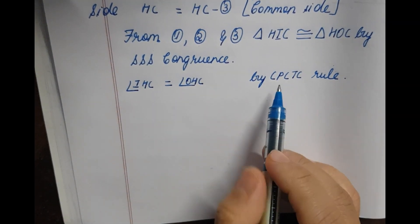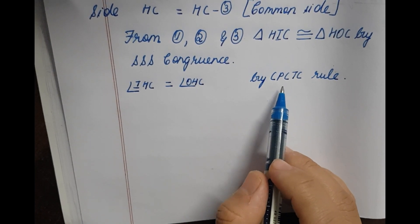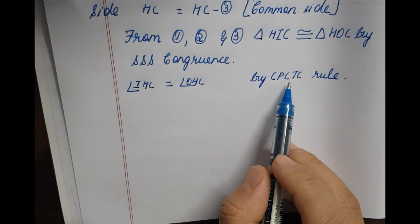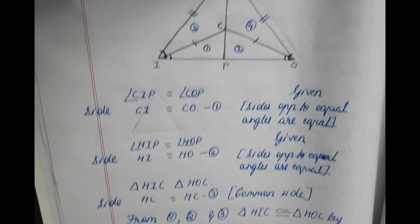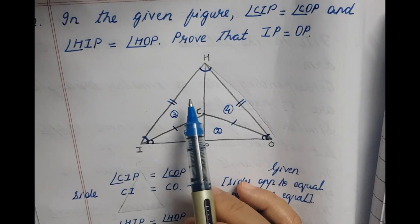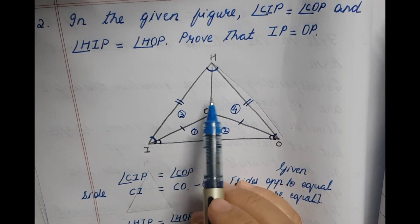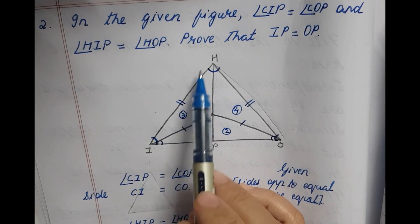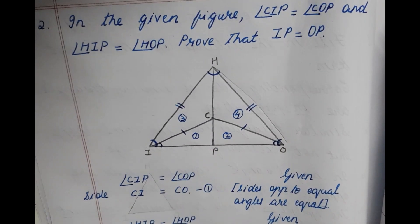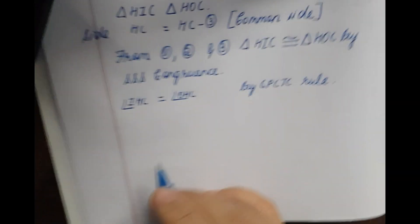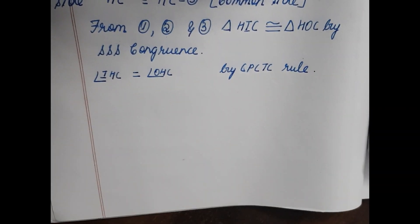So what is CPCTC? It is corresponding parts of congruent triangles are congruent. If you look at angle H, it should always come in the middle. So angle IHC is equal to angle OHC by CPCTC rule.